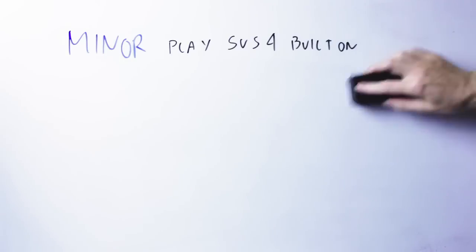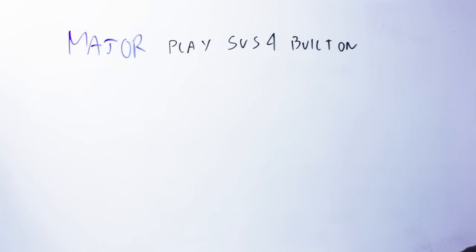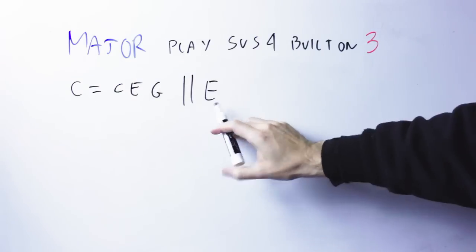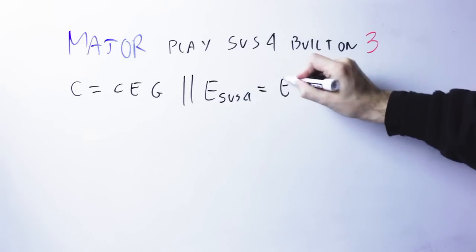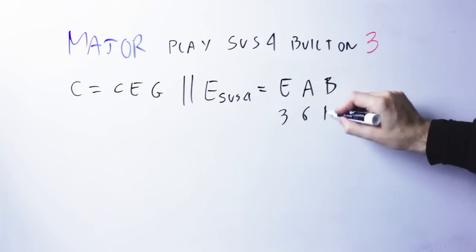Let's see what we do instead on major chords. On major chord, we use a similar strategy. We still play a suspended fourth chord on top of a major chord, but this time we build a suspended chord on the major third of the major chord. So, if I have a C major chord, my notes are C, E, G, the major third is E, and on top of it I'm playing an E suspended fourth chord.